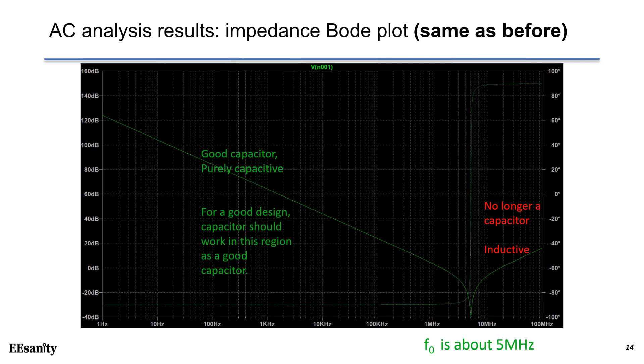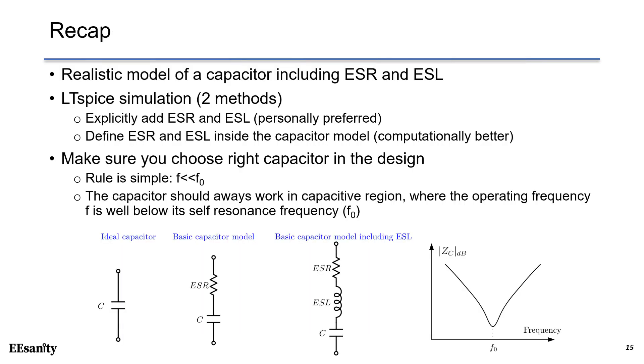Please run LTSpice simulation for practice. To recap, in this lecture, we talk about realistic models of a capacitor including ESR and ESL. We have studied two methods to run the LTSpice simulation. The first method defines the ESR and ESL using external components. The second method defines ESR and ESL inside the capacitor model. In your design, you have to make sure you choose the correct capacitor. The rule is simple. The capacitor should operate much below the resonant frequency. In other words, the capacitor should always work in the capacitive region, where the operating frequency is well below the self-resonant frequency. So that, in most cases, basic capacitor model is good for the simulation.